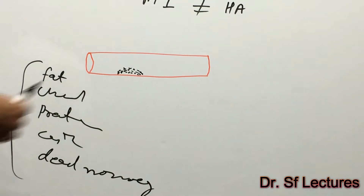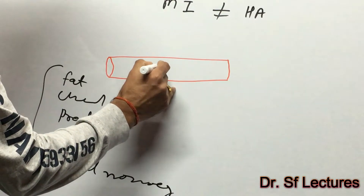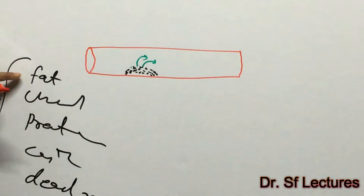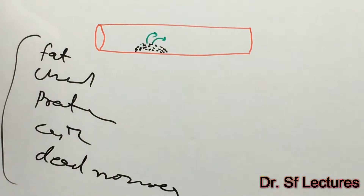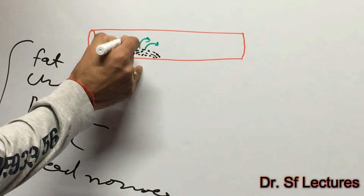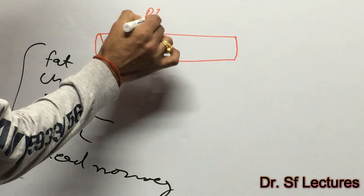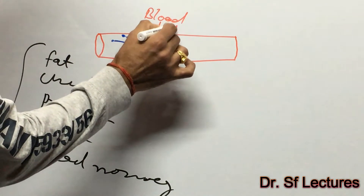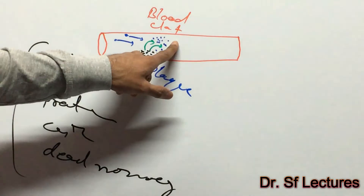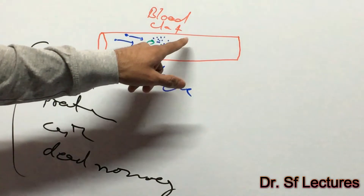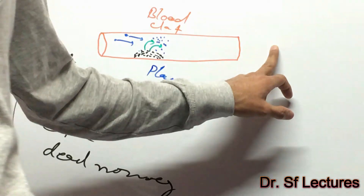Now talking about myocardial infarction: due to some growth of the tunica intima, this plaque gets destroyed in the coronary artery. All the fat, cholesterol, protein, calcium, and monocytes come out into the coronary artery. With the help of platelets, there will be a sudden blockage — a blood clot forms. This process of blood clot formation and complete blockage of the coronary artery, stopping blood supply to a particular heart tissue, is called myocardial infarction.